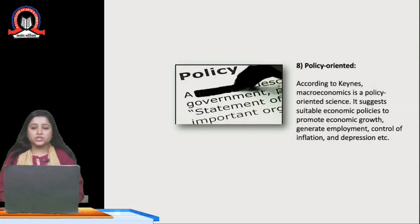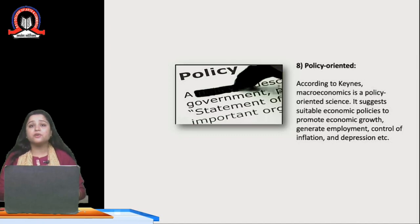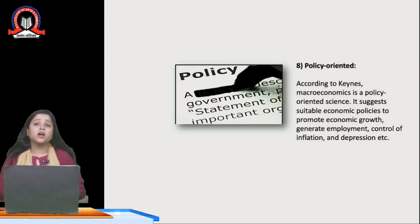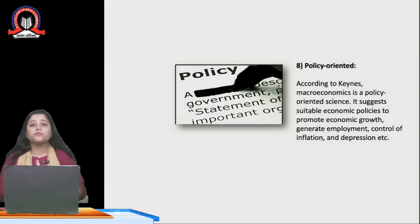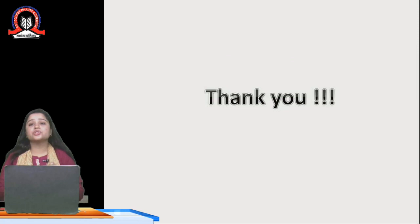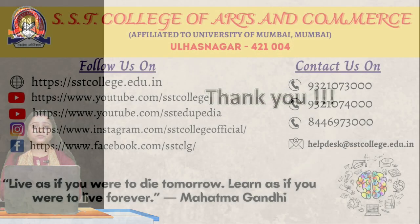The next feature is that macroeconomics is policy oriented. Macroeconomics is a policy-oriented science — it suggests and tries to formulate various policies necessary to promote economic growth, generate employment, and control inflation and depression in the economy. Macroeconomics helps to lay down various policies that are necessary for the overall economic development of the nation. These are the features of macroeconomics. Thank you.